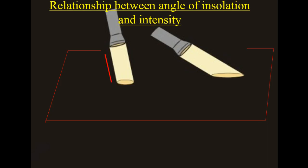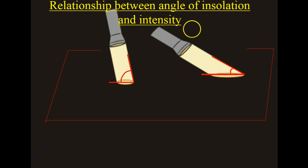We can use flashlights and paper to get this idea of the strength or intensity of the angle and the insolation. So if we take a flashlight and shine it at a greater, higher angle, we see that it will directly come down and form a smaller ray of light.